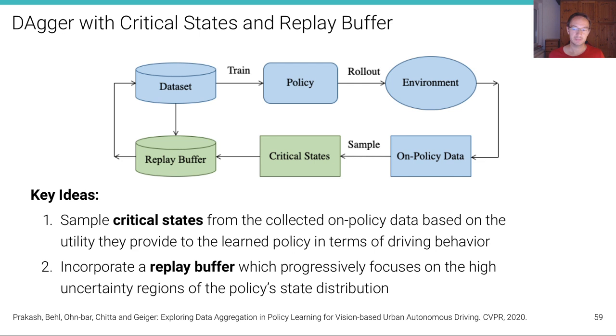So what we proposed in a paper that we had published in CVPR 2020 is to augment Dagger via a critical state subsampling and a replay buffer. And we found that only the combination of these two actually brings a benefit that then also helps this technique to apply to self-driving scenarios. The key idea here is to first sample critical states from the collected on policy data. We subsample the on policy data. We don't use all the data. But we choose selectively which data we want to aggregate based on the utility the data provides to the learned policy in terms of the expected driving behavior. And there are certain criterions that we use in order to determine the sampling.